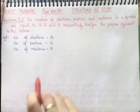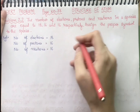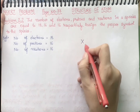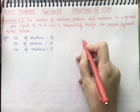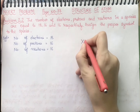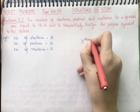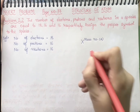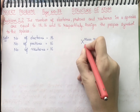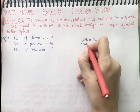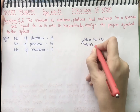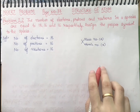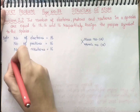Now they are saying: assign the proper symbol to the species. First of all, we will have a rough layout for the symbol. We know that there is an element X. The above value will represent the mass number, denoted by A, and the lower value will represent the atomic number, that is Z.